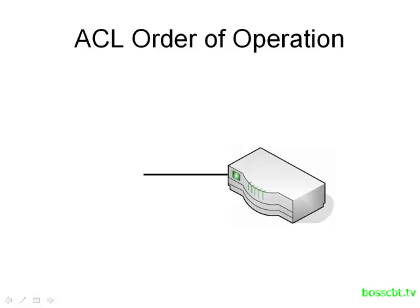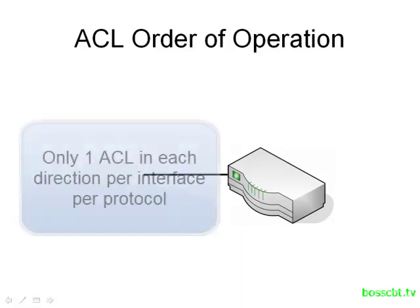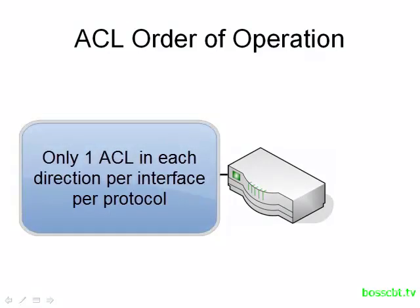Keep in mind, you can only have one Access List applied to an interface in each direction for each protocol. So for IP, we can have one IP Access List configured for the inbound and only one for the outbound on an interface. You cannot have two for the inbound and two for the outbound — only one Access List in each direction.